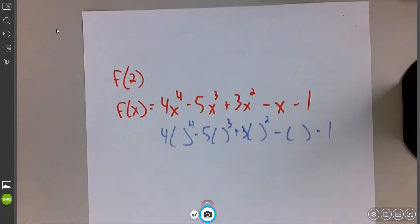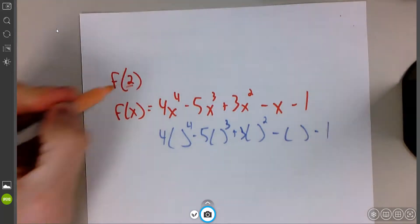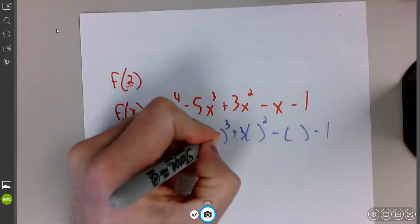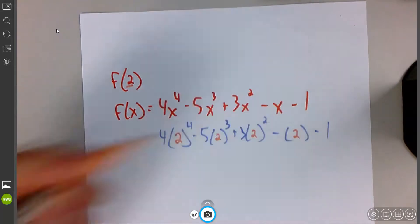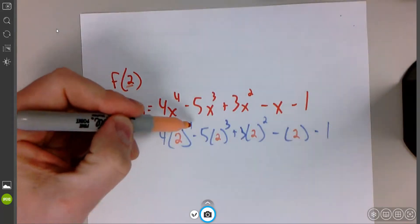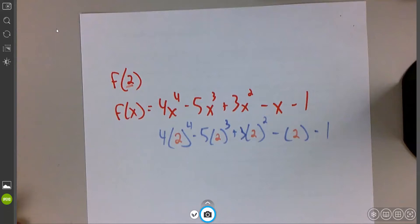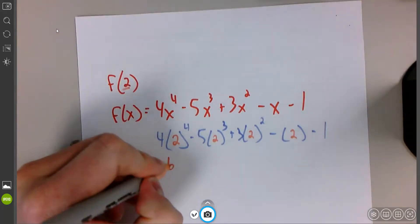In those parentheses goes the value I'm trying to plug in, which is a 2. So I'm going to put a 2 in all those things. And then I'm going to evaluate those. Okay, well, 2 to the fourth power, exponents come first. 2 to the fourth power is 16, and 16 times 4 is 64.